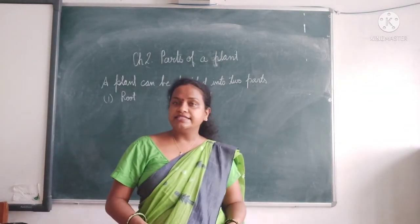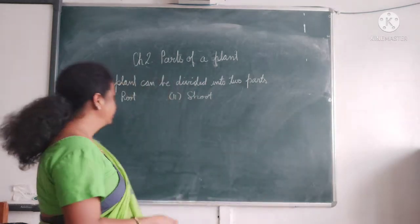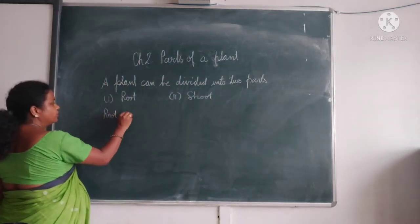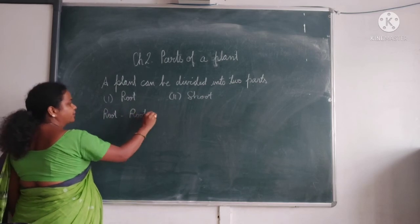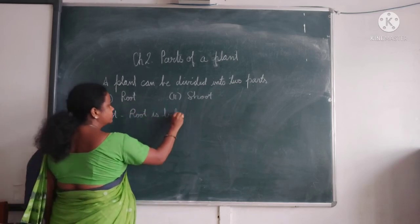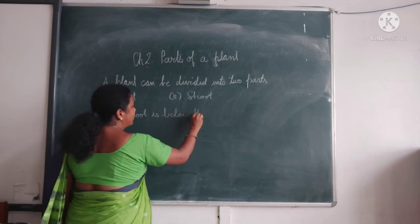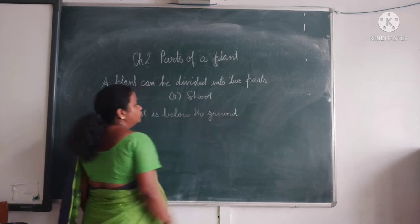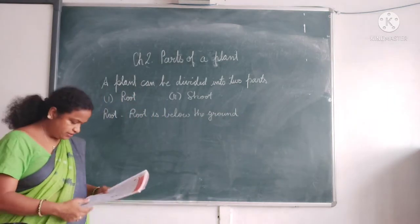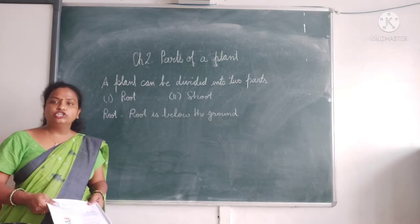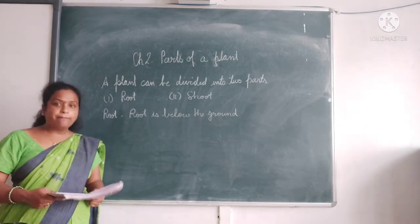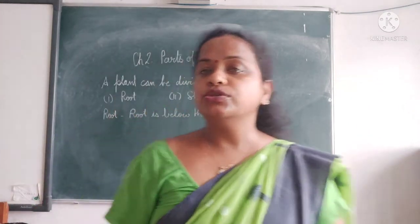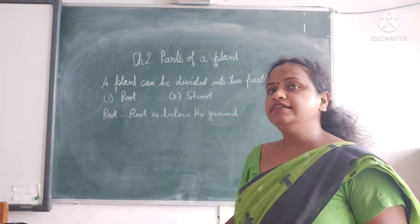First, we will study about what is the root. The root is below the ground — the portion of the plant which is below the ground is called the root. The root supports the plant to stand upright and straight.